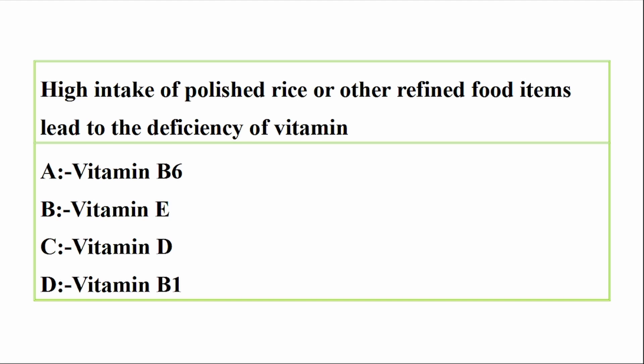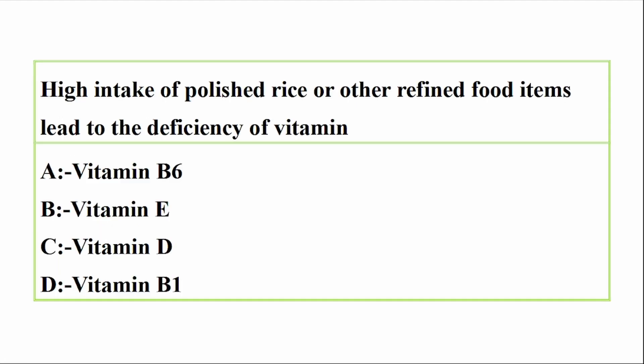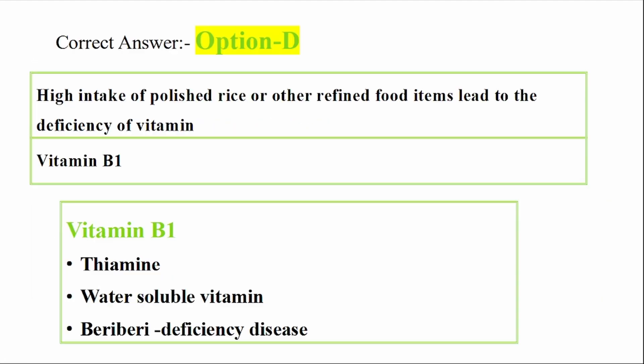Question: High intake of polished rice or other refined food items leads to the deficiency of which vitamin? Options: A. Vitamin B6, B. Vitamin E, C. Vitamin D, D. Vitamin B1. Correct answer: Option D, Vitamin B1.